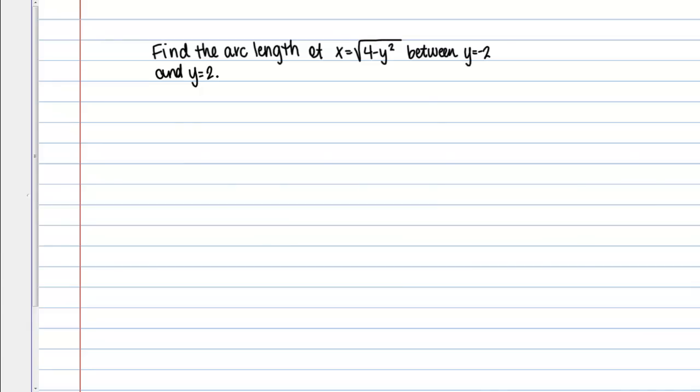In this example we're asked to find the arc length of X equals the square root of 4 minus Y squared between Y equals negative 2 and Y equals 2.